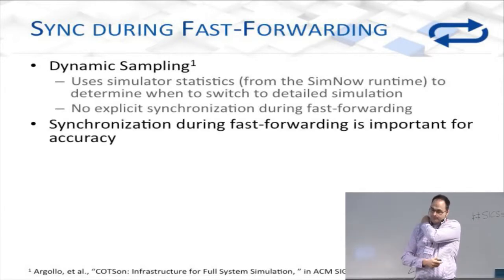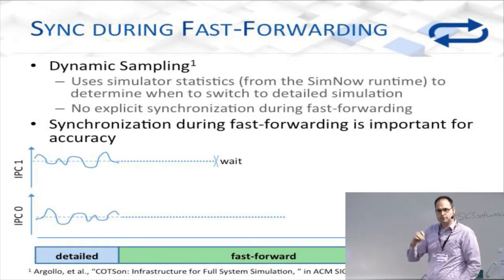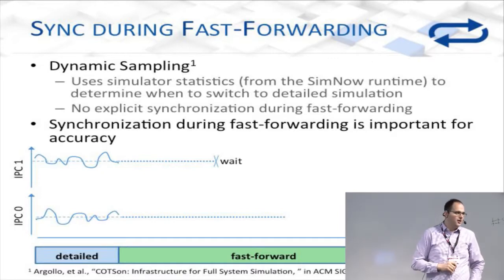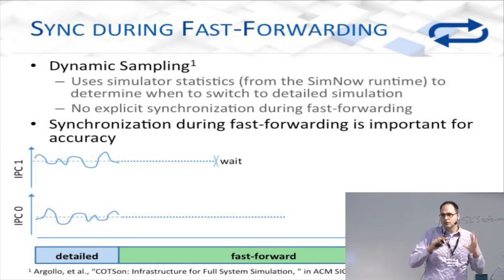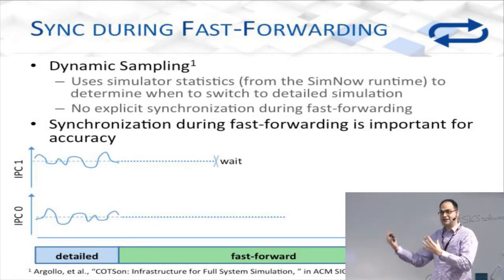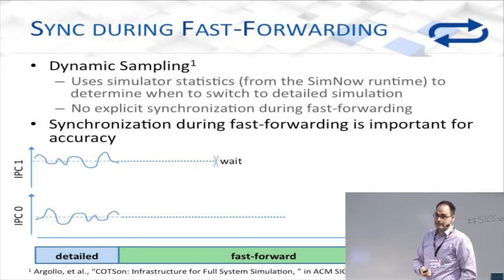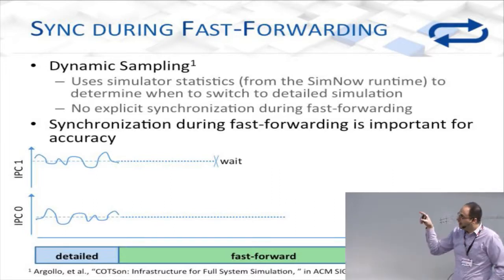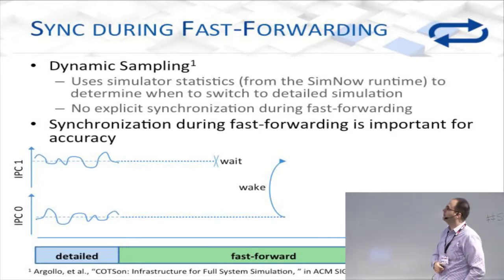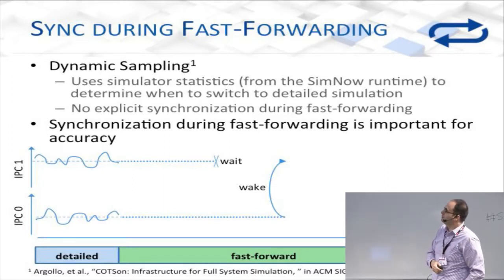Here's a little example. We have a detailed region and a fast-forward region, and the squiggly lines represent the performance of this application. When sampling, you go into a fast-forwarding phase where you skip a bunch of instructions very quickly. But because we have synchronizing applications, we still have sleeping, waking, and waiting of threads. If you have a thread on top that waits and the thread on the bottom wakes it up, the amount of time this takes is still important. In the previous work with dynamic sampling, they didn't take this into account, and it can lead to significant errors.